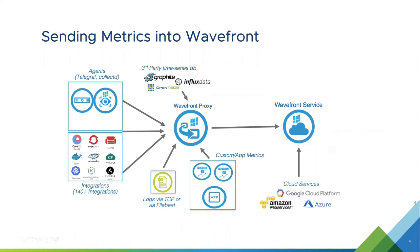We have agents that can collect metrics from certain technologies — agents such as Telegraf, StatsD, collectd, etc. Those metrics are sent through a proxy, which acts as an on-premise gateway to the Wavefront service. We can ingest metrics from third-party solutions like Graphite, InfluxDB, and OpenTSDB through that proxy. Customers can also create custom metrics as telemetry within their code, take metrics from log solutions, and cloud platforms like Azure, Amazon, and Google can send metrics directly to Wavefront. You can also send metrics via an API directly to the service.